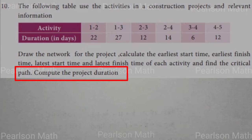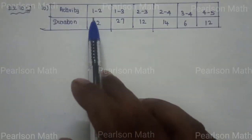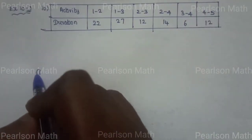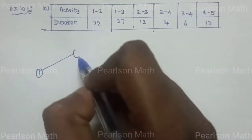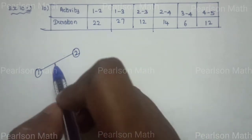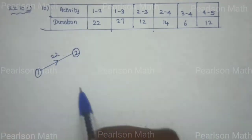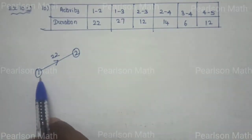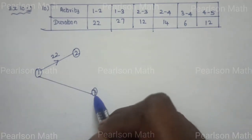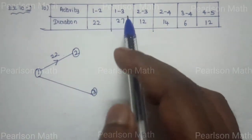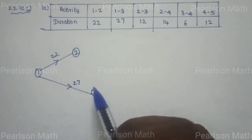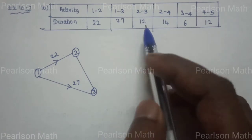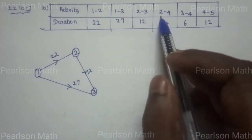So now from this table, we'll find out. First, activity 1 to 2: we draw nodes 1 and 2, duration is 22. Next, 1 to 3: we draw the line, duration is 27. Next, 2 to 3: line draw, project duration is 12.